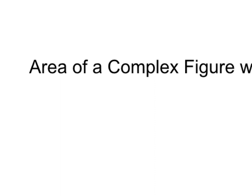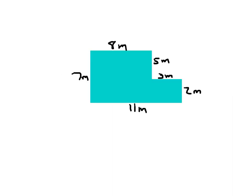Let's take a look at how to figure out the area of a complex figure with all right angles, which basically means it'll be made up of rectangles and squares. This figure here has all of its sides labeled. It's not a rectangle and it's not a square — it's a complex figure made up of rectangles and squares. In this case, it's two rectangles.